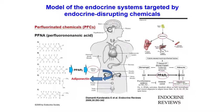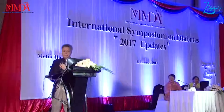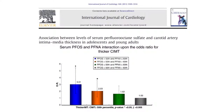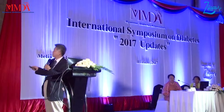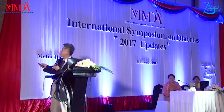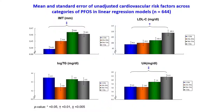We also showed that PFMA and PFOS interact on the odds ratio of the thicker IMT. When PFOS is higher and PFMA is low, the risk of thicker subclinical atherosclerosis, as measured by IMT, will increase.